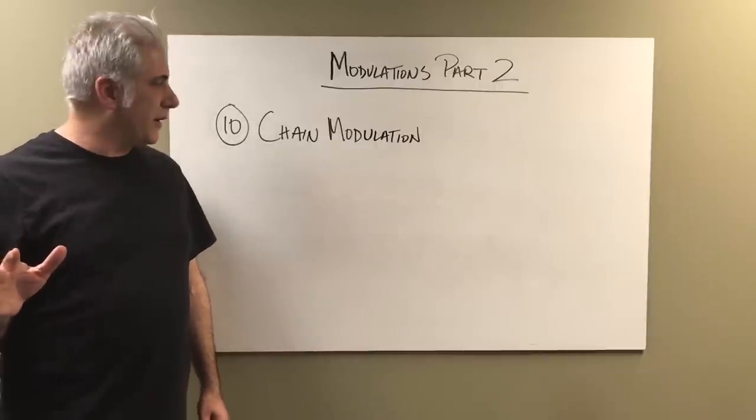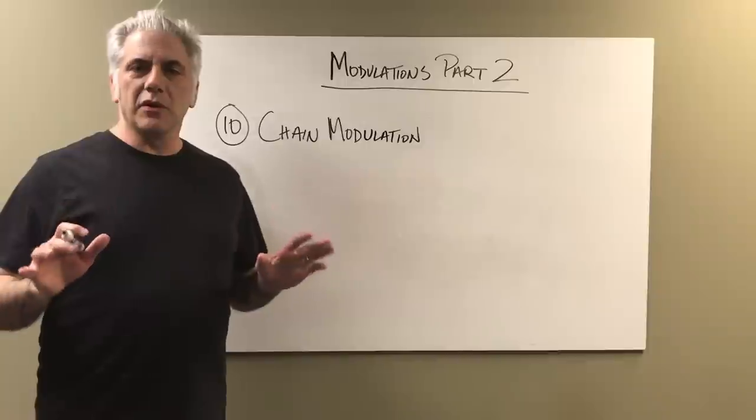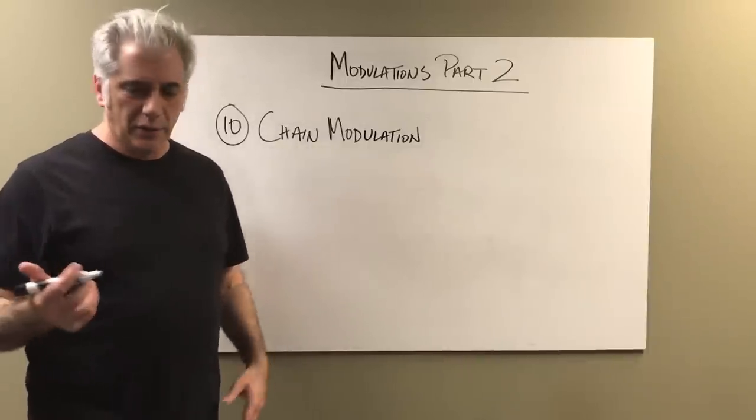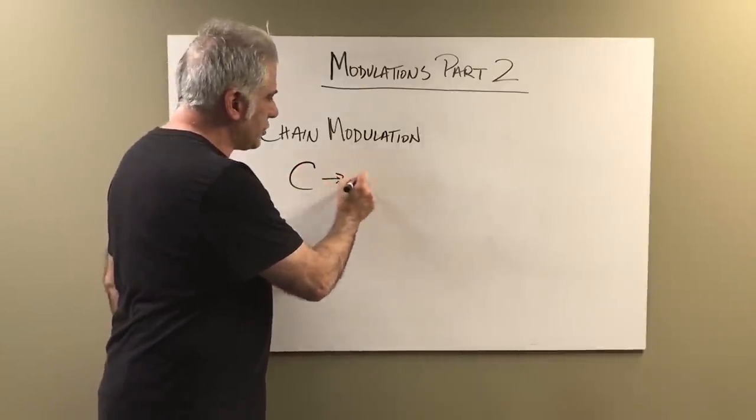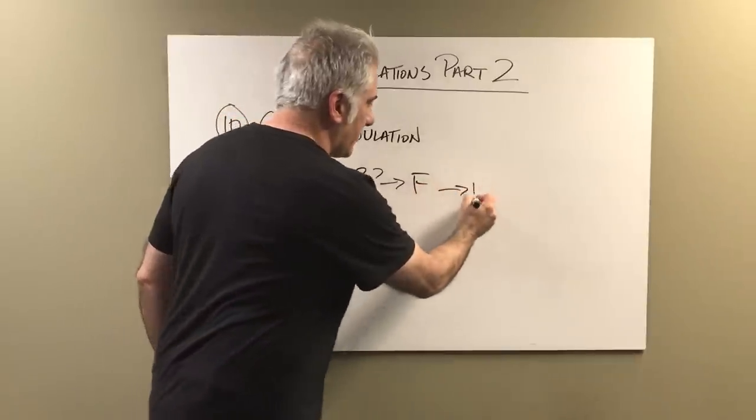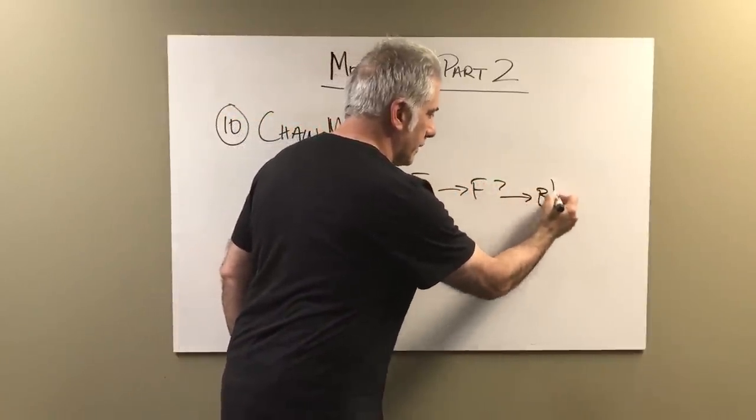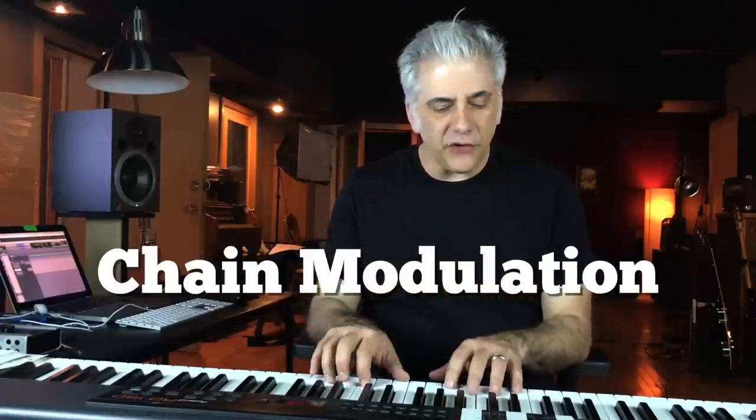Number ten in our modulation chart is the chain modulation. This one is kind of similar to the circle of fifths or going around the cycle. Let's say you've got a C major chord, then you change it to a C7, to F major, to F7, to B flat major — that's a chain modulation. It's essentially going from a tonic, then flatting the seventh to make it a dominant chord, then resolving to its one chord, and doing the same sequence over and over. That would be a chain modulation.